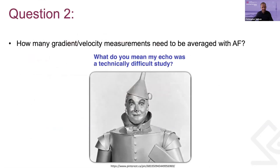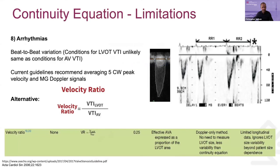The last part of the talk addresses how many gradient or velocity measurements need to be averaged with atrial fibrillation. The guidelines recommend averaging five velocities or gradients due to beat-to-beat variation in loading conditions, which has a profound effect on the continuity equation.